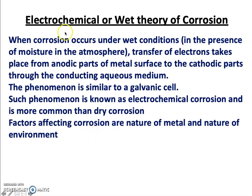There is an electrochemical or wet theory of corrosion. When corrosion occurs under wet conditions — in the presence of moisture — electrons transfer from the anodic part of the metal to the cathodic part through the conducting aqueous medium, representing a galvanic cell. This is known as electrochemical corrosion and is more common than dry corrosion. Dry corrosion is the deterioration of metal under dry conditions, in the absence of moisture, whereas rusting of iron is a typical example of wet corrosion.